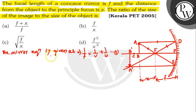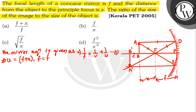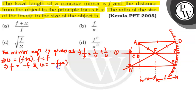According to the question, we have our object x distance from the principal focus f, as shown in the figure. So from the figure, u = f + x, and f = f. As the mirror is concave, both these distances have to be taken as negative as per the Cartesian sign convention. So f = −f and u = −(f + x).